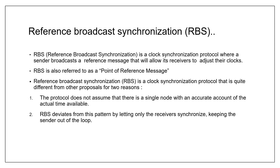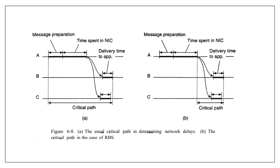This protocol is shown in the following diagram. A key observation is that in a sensor network, the time to propagate a signal to other nodes is roughly constant, provided no multi-hop routing is assumed. Propagation time is measured from the moment a message leaves the network interface of the sender. As a consequence, two important sources of variation in message transfer no longer play a role in eliminating delays — that is, the time spent in construction of a message (message preparation) and the time spent in the NIC, as shown in Figure B. In Figure A, the critical path in determining network delays without RBS is shown, from message preparation till delivery time.